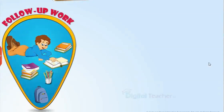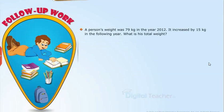Follow-up words: A person's weight was 79 kg in the year 2012. It increased by 15 kg in the following year. What is his total weight?